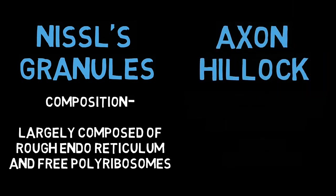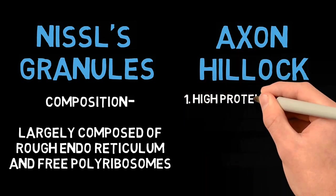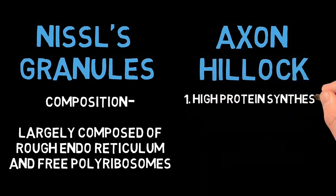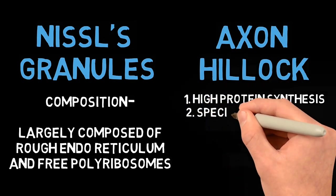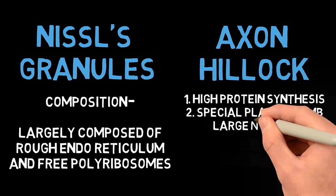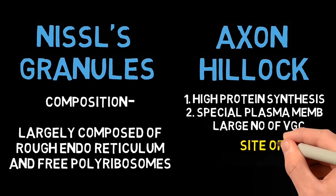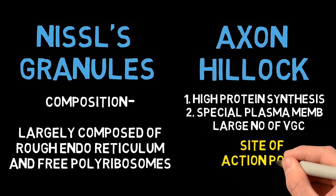Next, let us talk about the axon hillock, a region of the cell body from where the axon originates. The axon hillock has two very special features. First, this region has a very high amount of protein synthesis because of a large number of Nissl's granules. And second, it has a special plasma membrane which has a large number of voltage gated channels. This is the site of action potential.